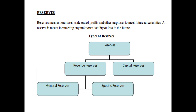Then reserves. Reserve means amount set aside out of profits and other surpluses to meet future uncertainties. A reserve is meant for meeting any unknown liability or loss in the future. Everybody saves a certain amount of money — whether it be you, me, your parents, or even business tycoons. They save a part of their profits as a reserve, kept aside for unknown uncertainties, so that in future if some mishappening happens which they don't know, they have savings for that purpose. That is known as reserve.